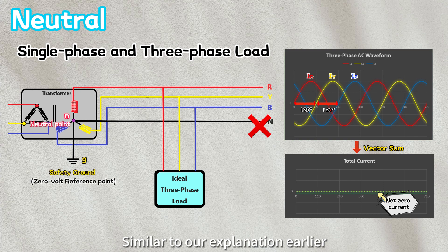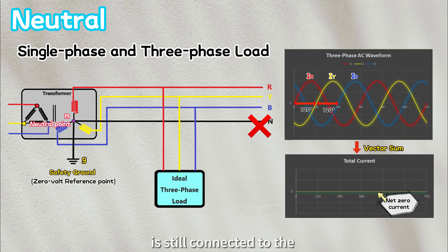Similar to our explanation earlier, although the neutral cable is not necessary in the case of a balanced load, the neutral point at the transformer is still connected to the ground reference point to maintain an equal potential. This connection prevents the occurrence of unpredictable and hazardous live-to-ground voltages.